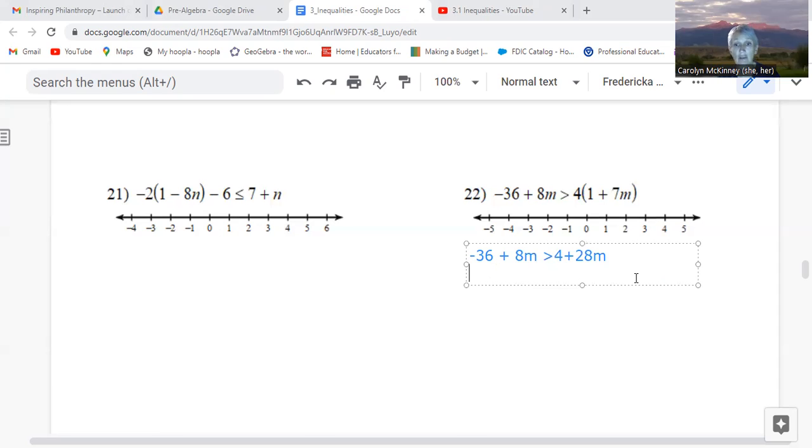Now, it is completely up to you which side you put them on. But for most of my students, it's easier to make the graph if their variable is on the left. And so for that reason, I'm going to subtract the 28m so that I move my variable off of the right side. And when I do that, I'll also have to subtract it over here. The negative 36 is of course still here. On the left side, positive 8m and negative 28m would be negative 20m. Greater than. And then over here, the 28m and negative 28m cancel. All we have left is 4.